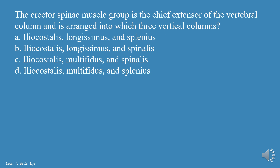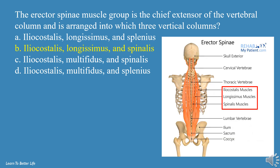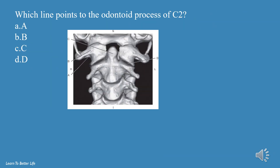The erector spinae muscle group is the chief extensor of the vertebral column and is arranged into which three vertical columns? a. iliacostalis, longissimus, and splenius, b. iliacostalis, longissimus, and spinalis, c. iliacostalis, multifidus, and spinalis, d. iliacostalis, multifidus, and splenius. The answer is b, iliacostalis, longissimus, and spinalis.